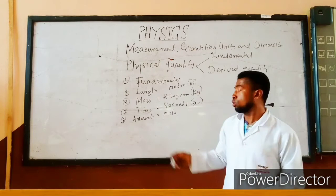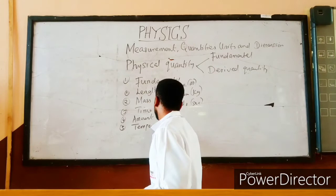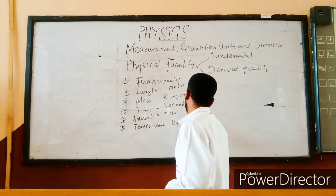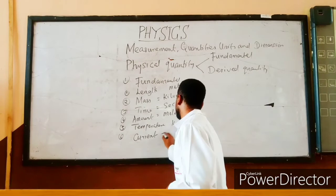The fifth fundamental quantity is temperature. Temperature is measured in Kelvin, and the symbol is K. We also have another fundamental quantity called current. Current is also a fundamental quantity, and it is measured in ampere. The symbol is A.